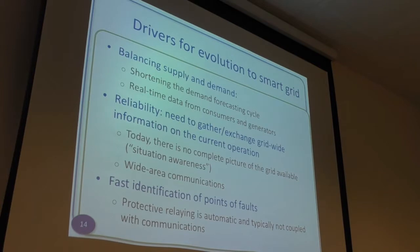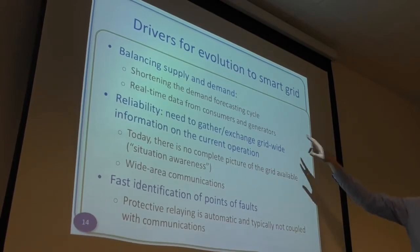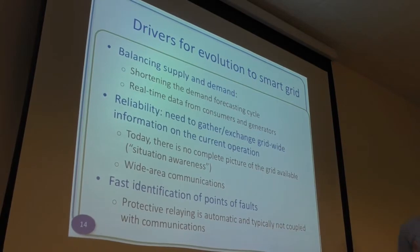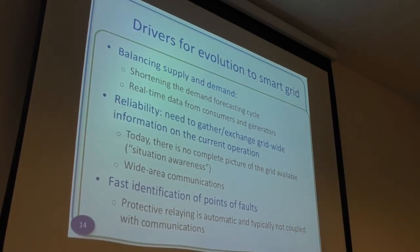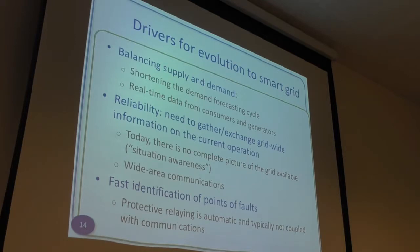Why do we need the smart grid? Balancing supply and demand is a key thing — you want to forecast demand on a shorter time span and have real-time data from consumers and generators. This is important now that we're seeing more renewable energy sources, because things can fluctuate on much shorter time scales. If you have a solar farm and then a cloud comes, you suddenly see a drop in power level that you need to react to very quickly.